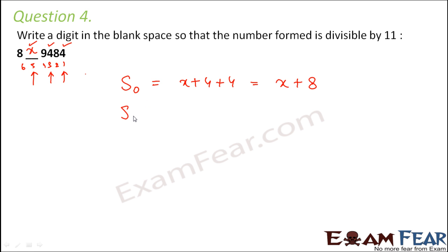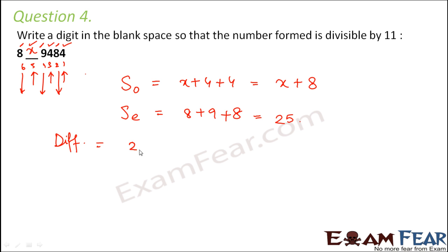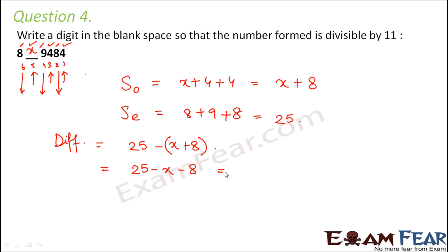Similarly, the sum of digits at even places corresponds to positions 6, 4, and 2 — that is digits 8, 9, and 8. So 8 plus 9 plus 8 equals 25. Now let us find their difference: 25 minus (x plus 8), which equals 25 minus x minus 8, that is equal to 17 minus x. This is the difference. As per the rule, if this difference is either 0 or divisible by 11, only then will the number be divisible by 11.